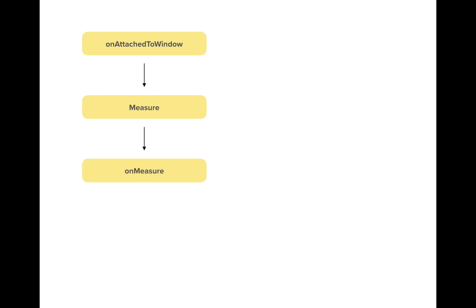The next thing is measure and the third thing is onMeasure — I'll take a look at both of them together. Measure and onMeasure are called one after another. You have to understand that the view hierarchy in a custom view — all the parent views and their child views — come in a top-down manner in a tree.